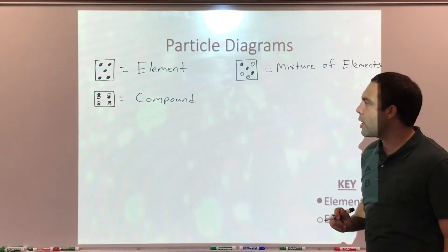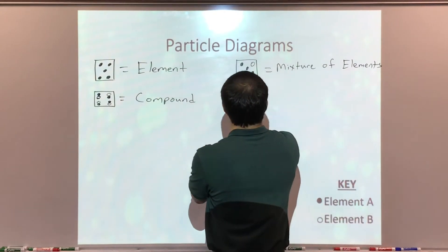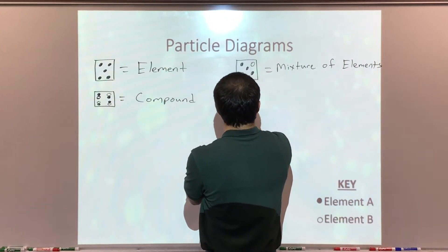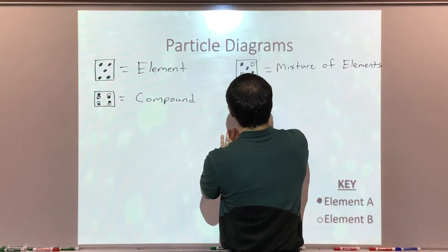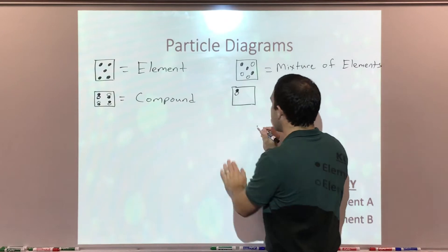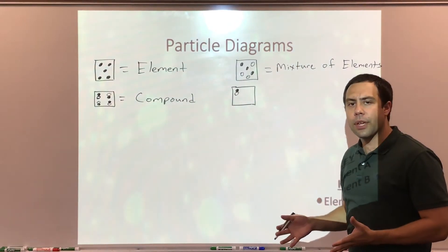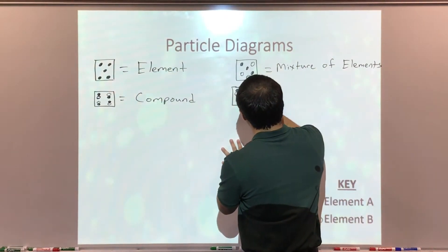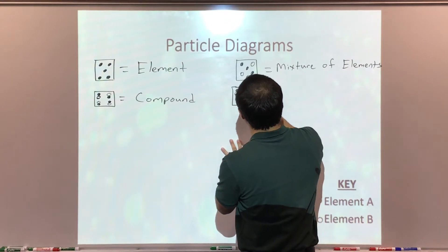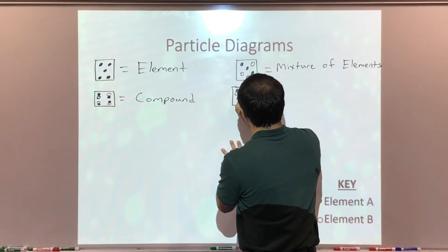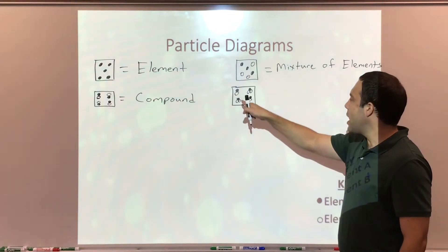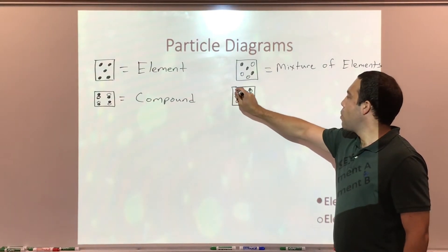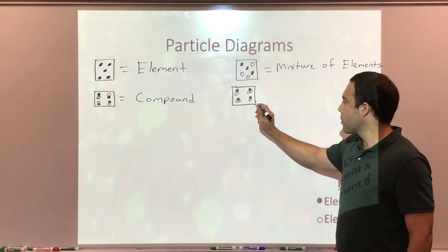And I can do the same for compounds — I can have a mixture of compounds. I can take the compound we had before: one shaded and one open. But now I have to make a different compound, so maybe this time I have one shaded and two open circles. And finally, one shaded and one open. So I have two sets of compounds.